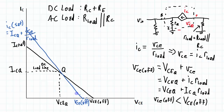Now what the AC load line tells you is what the maximum peak-to-peak output you can have for a circuit without clipping occurring. So remember we're going to be biased at the operating point, and I'm going to be able to swing down to here and swing up to here without clipping on those two sides.